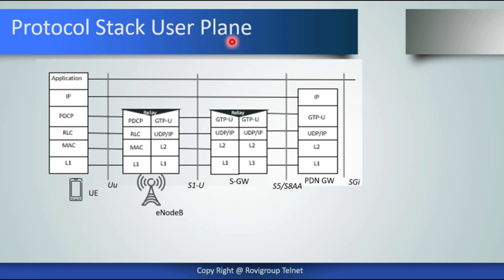Now we have the protocol stack user plane, in contrast to the control plane discussed earlier. Here, instead of NAS signaling, we have the application layer followed by the IP layer. Then we have PDCP, RLC, MAC, and L1 at the UE, and similarly PDCP, RLC, MAC, and L1 at the eNodeB. PDCP performs robust header compression, RLC maps to logical channels and performs segmentation, in-sequence delivery, and retransmission.